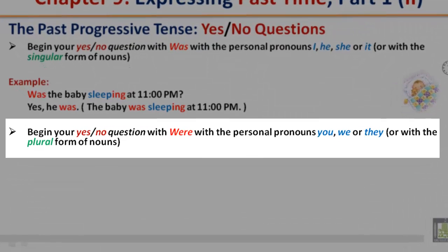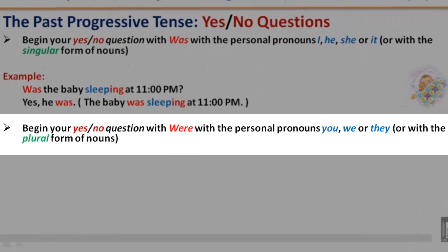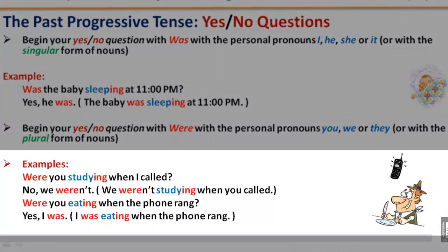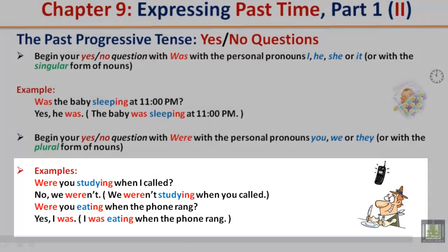Begin your yes or no question with 'were' with the personal pronouns you, we, or they, or with the plural form of nouns. Were you studying when I called? No, we weren't. We weren't studying when you called. Were you eating when the phone rang? Yes, I was. I was eating when the phone rang.